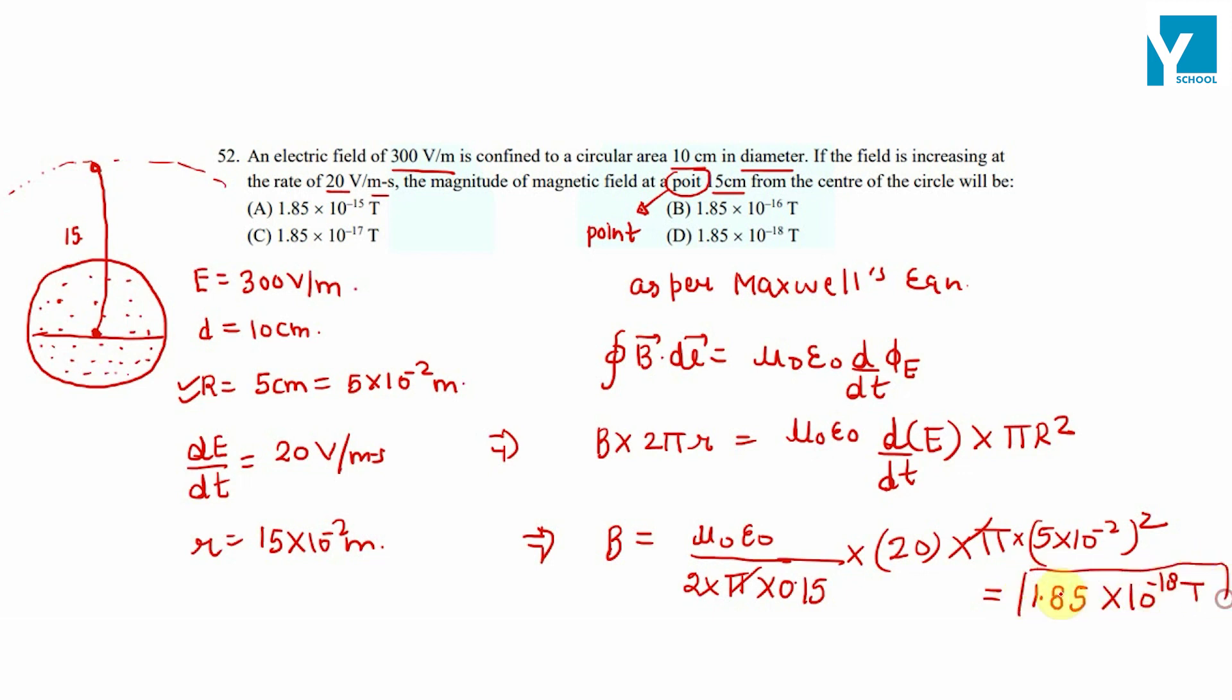Simply Maxwell's equation. This is the displacement current, the current due to changing electric field. However, in this question the conduction current IC is zero.